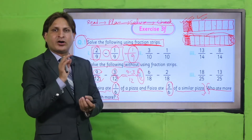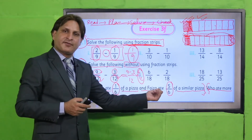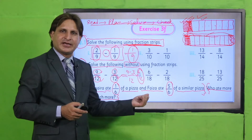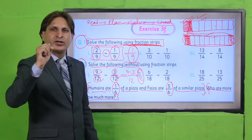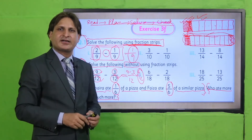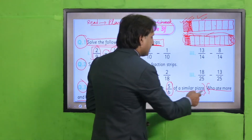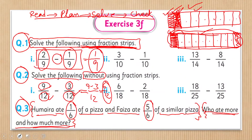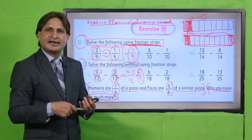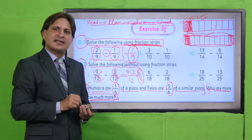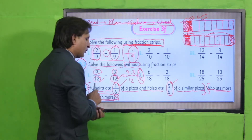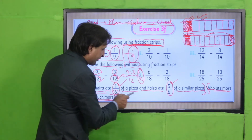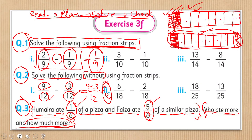پیزا کسنے زیادہ کھایا یہ find کرنے کے لیے ہم دونوں fractions کو compare کریں گے۔ Compare کرتے وقت دیکھیں fractions like ہیں یا unlike — اگر like fractions ہیں تو numerator compare کریں۔ جس fraction کا numerator greater ہوتا ہے وہ fraction greater ہوتی ہے۔ Second required part: how much more? دونوں کے denominators same ہیں تو numerators compare کریں — five والا greater ہے، یعنی Faiza نے زیادہ کھایا۔